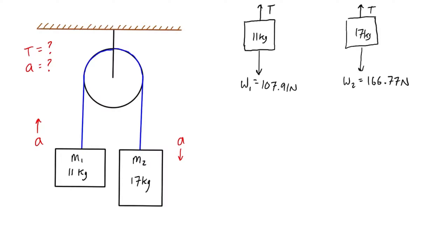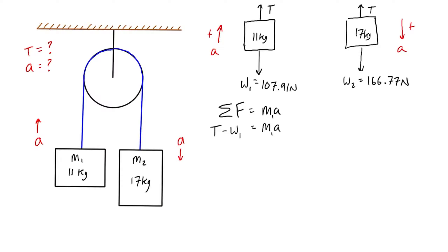For mass 1, the positive direction is upward, matching its acceleration. Applying Newton's second law — sum of forces equals ma — tension is positive (upward) and W1 is negative (downward): T − W1 = m1·a. Isolating for T gives T = m1·a + W1, or T = 11a + 107.91 newtons.